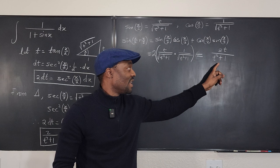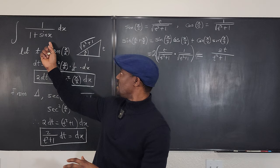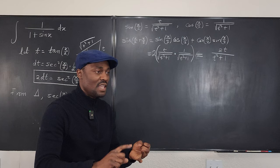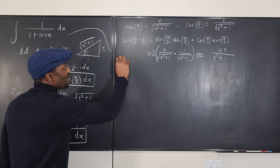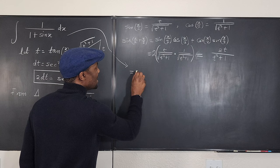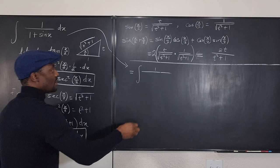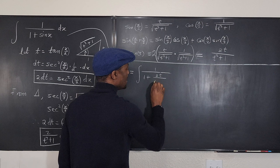Every time you make this substitution, sine x equals 2t over t squared plus 1, and cosine x equals 1 minus t squared over t squared plus 1. Now coming back to the original integral, we can write it as the integral of 1 over 1 plus sine x — substituting sine x as 2t over t squared plus 1.